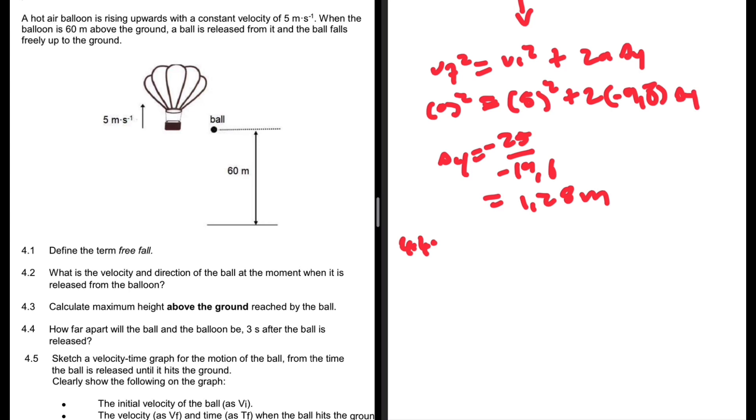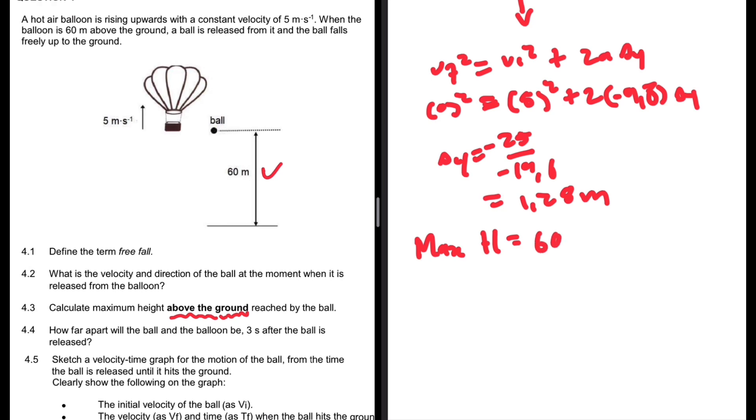That is the mistake most people make. The question calls for the maximum height above the ground, not the displacement from when it is projected. The maximum height above the ground equals 60 meters as we can see from the sketch, plus 1.28, giving us 61.28 meters. Make sure you don't miss those kinds of things.